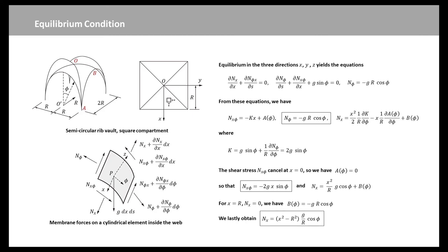The side arches are unable to sustain the force Nx orthogonal to their plane, so that for x equals R, Nx equals 0, and B_phi equals negative R times g times cosine phi. Therefore, we lastly obtain Nx expression.